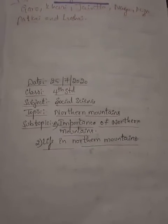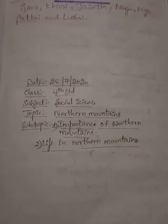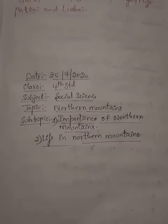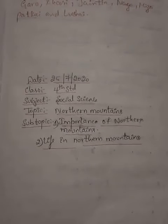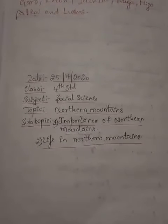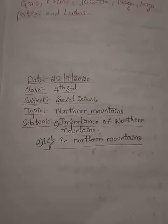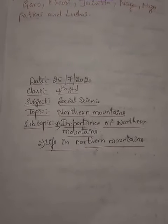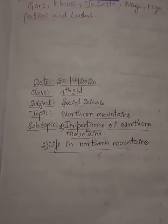The Himalayan region has three parallel ranges which do not run close to each other: Greater Himalayas or Himadri, Lesser Himalayas or Himachal, and Lower Himalayas or Shivalik. The famous mountain peaks found in the Greater Himalayas are Mount Everest, Kanchanjunga, and Nangarparbat. These are the three peaks we find in Himadri or the Greater Himalayas.